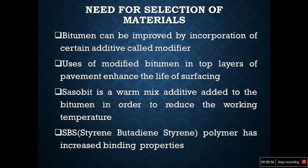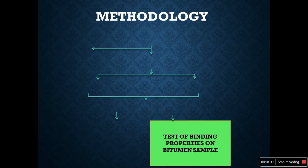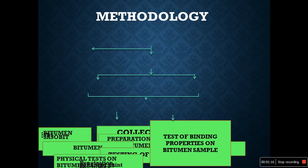The need for the selection of these materials is that bitumen can be improved by incorporation of certain additives called modifiers. Use of modified bitumen in top layers of pavement enhances the life of surfacing. Sasobit is a warm mix additive added to bitumen in order to reduce the working temperature, and SBS polymer has increased binding properties.